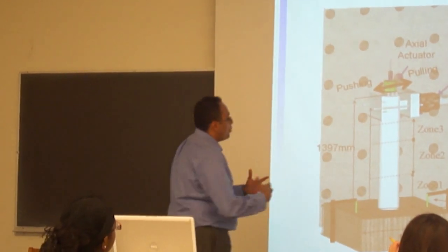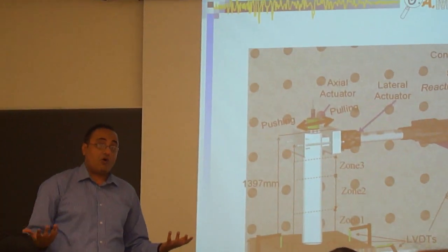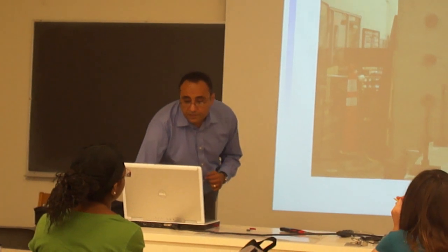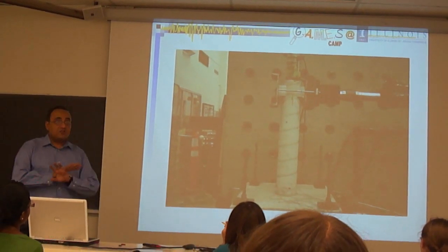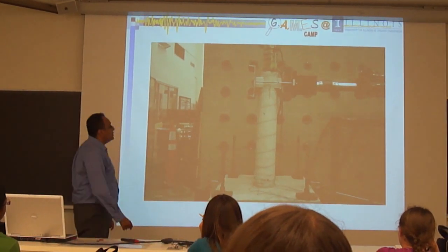And then we, of course, wrap the column at the base here with the SMA spirals. And then we start seeing how it will behave. So, for example, let me show you one video here for a column without any wraps. There's nothing applied there. And please look at the damage happening down here.